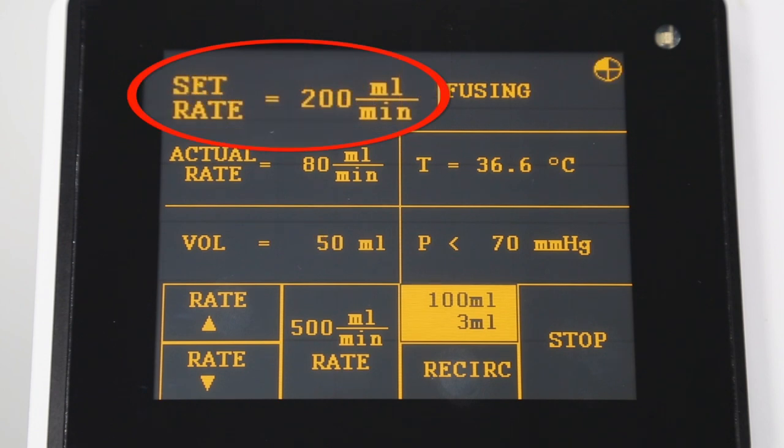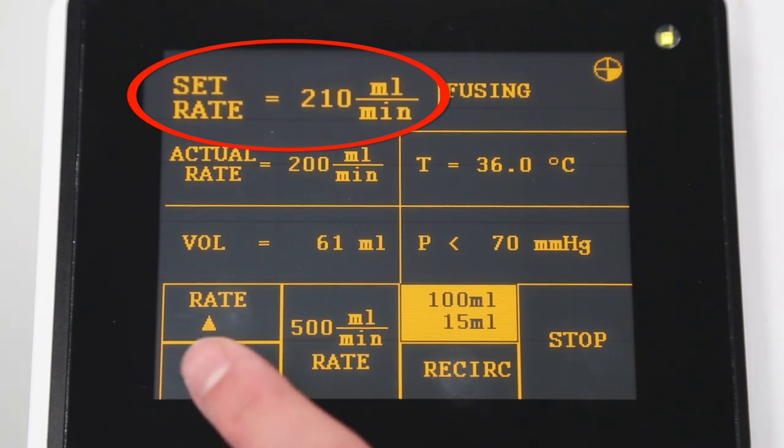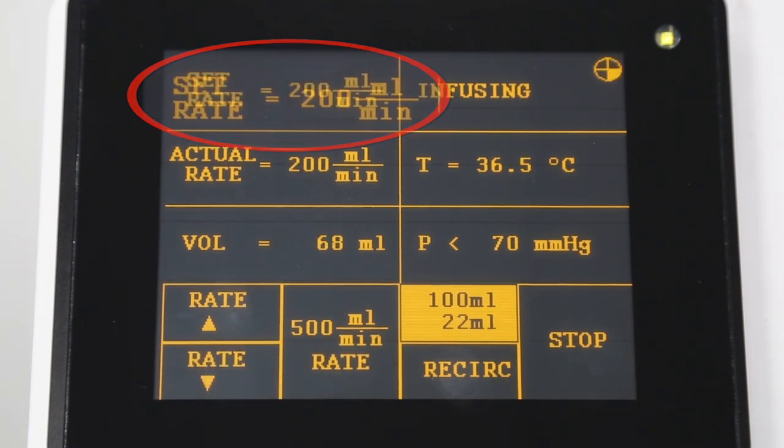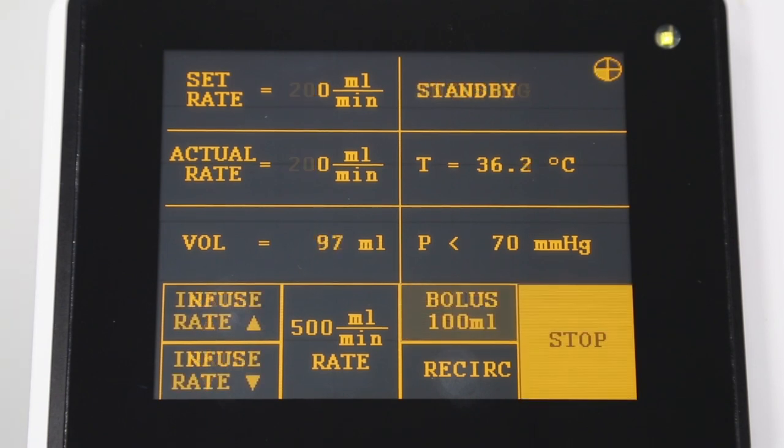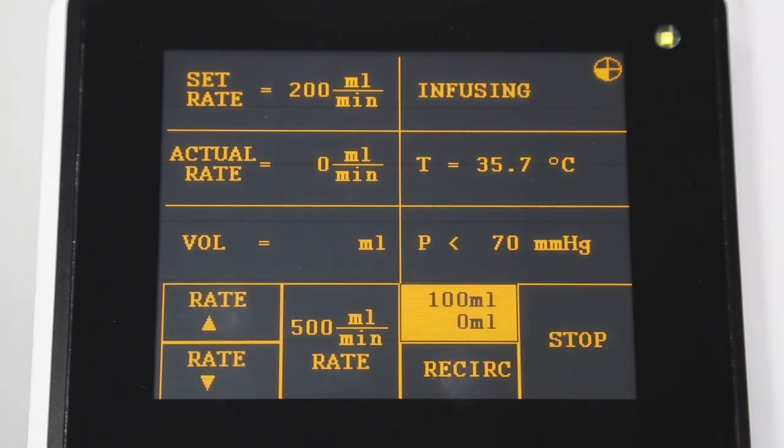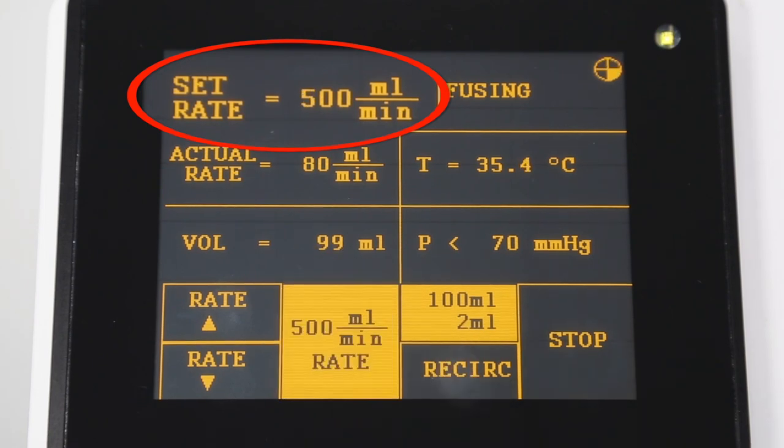The default infusion rate is 200 milliliters per minute. To change the infusion rate, simply press the up arrow to increase the rate or the down arrow to decrease the rate. If you would like the bolus to be delivered at 500 milliliters per minute, press the bolus key and then press the 500 milliliters per minute rate key.